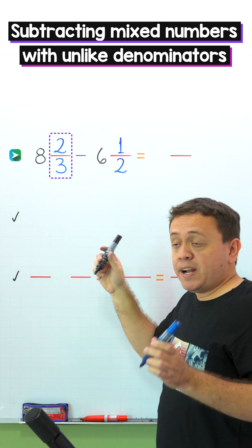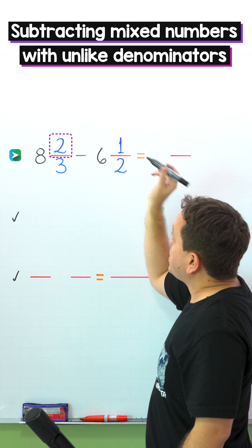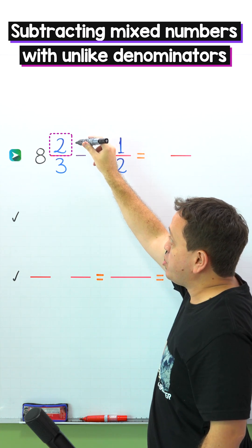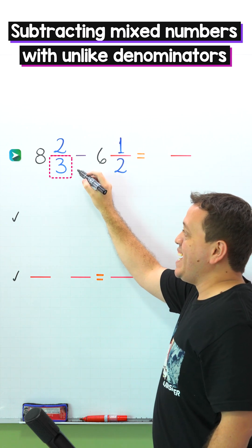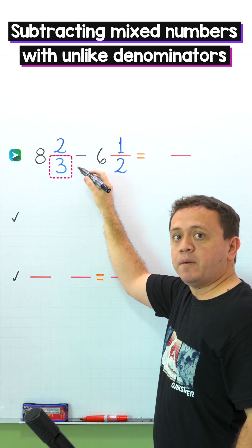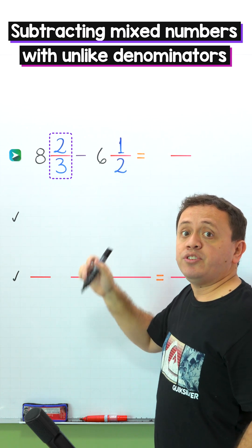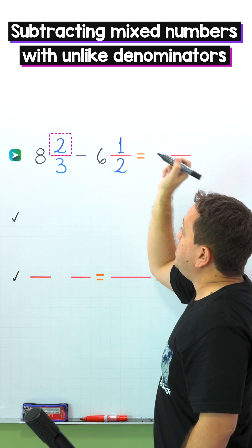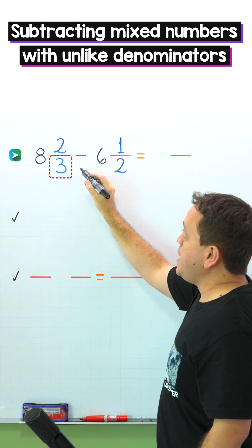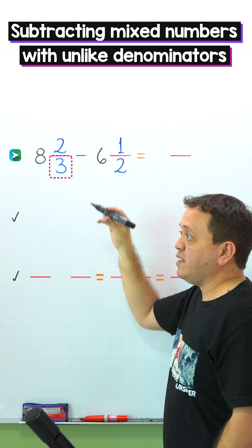Also, a proper fraction is a fraction where the numerator, the top number, is less than the denominator, the bottom number. Two thirds is a proper fraction, given that the numerator 2 is less than the denominator 3.